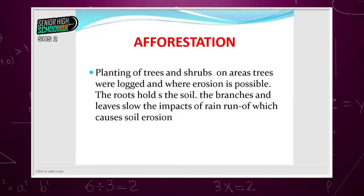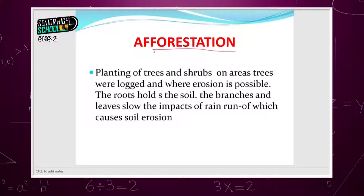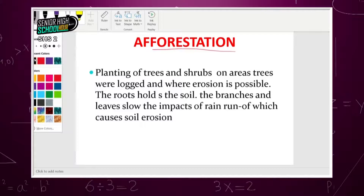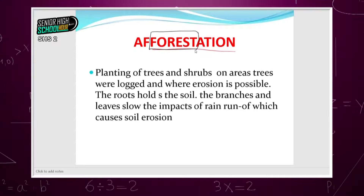When we plant trees, the roots hold soil together. The branches and leaves slow the impact of rain runoff, which can cause soil erosion. The word afforestation contains the idea of forests — growing forests which are mostly made of trees and a few lower plants.